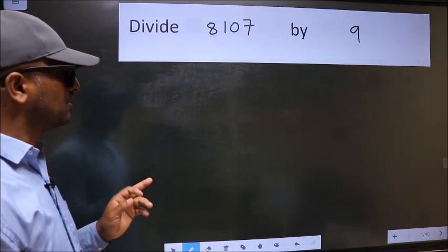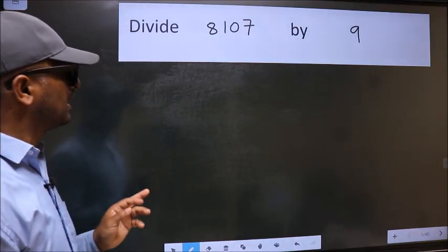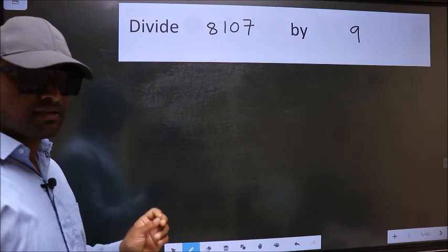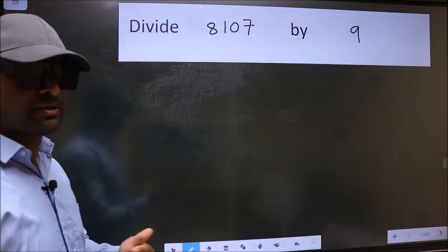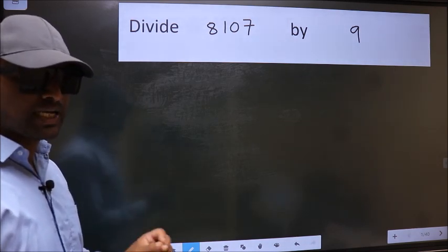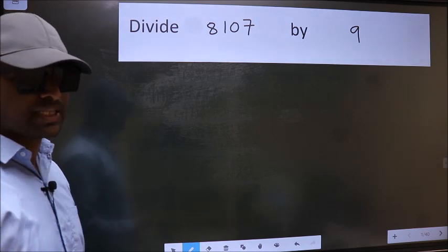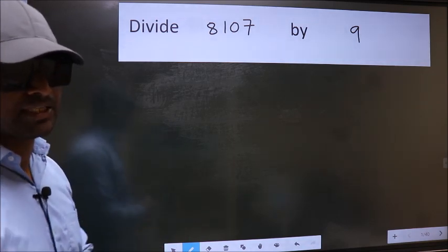Divide 8107 by 9. While doing this division, many do this mistake. What is the mistake that they do? I will let you know. But before that, we should frame it in this way.